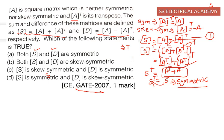Since S is symmetric and not skew-symmetric, option C (S is skew-symmetric) is incorrect. Option B, which states both matrices are skew-symmetric, is also incorrect. So we need to check options A and D.